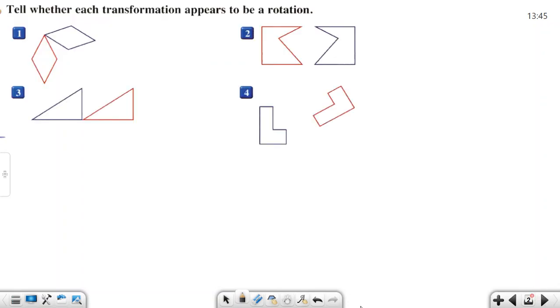Okay, let's see some examples. What kind of questions in the book. Tell whether each transformation appeared to be a rotation or not.